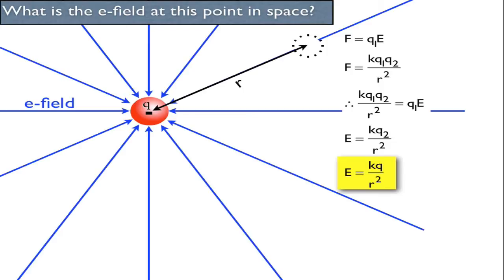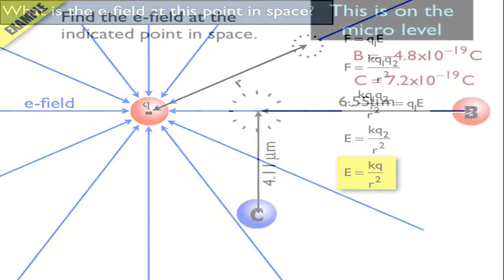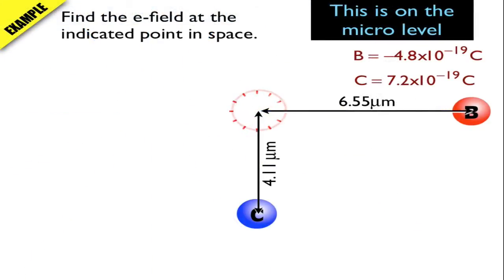All right, so now let's use this with a couple particles and find the net electric field at a point in space. So I'm going to find the E field at this indicated point in space. You can see how I've got it pulsating as a point in space. And I've got two charges.